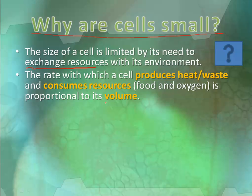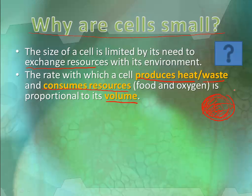When you think about the volume of a cell, the space inside is related to how fast the cell produces heat and waste, and how quickly resources get consumed — because that's all happening inside. Inside, heat and waste are being produced, and resources like glucose are being broken down by mitochondria and other organelles. So when you think volume, think: heat production, waste production, and consumption of resources inside the cell.